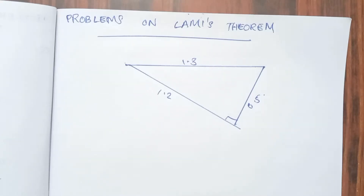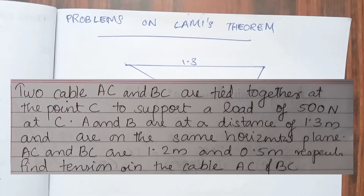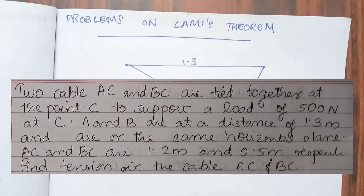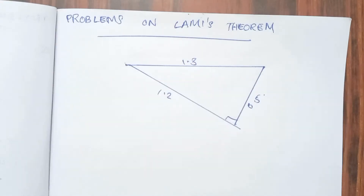We have a question. Two cables AC and BC are tied together at a point C to support a load of 500 N at point C. A and B are at a distance of 1.3 meters apart and are on the same horizontal plane. AC and BC are 1.2 meters and 0.5 meters respectively. Find the tension in the cable AC and BC.